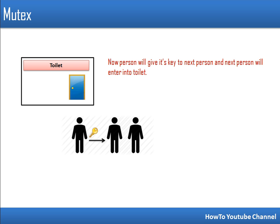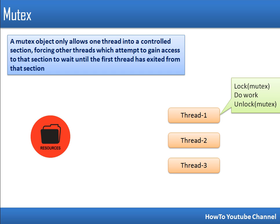Now it is possible that while the mutex object is owned by one thread, another thread tries to access that critical section. In that case it will return an error. So let's see the actual scenario. We have a resource and three threads trying to access it — it can be simultaneous access or sequential access.